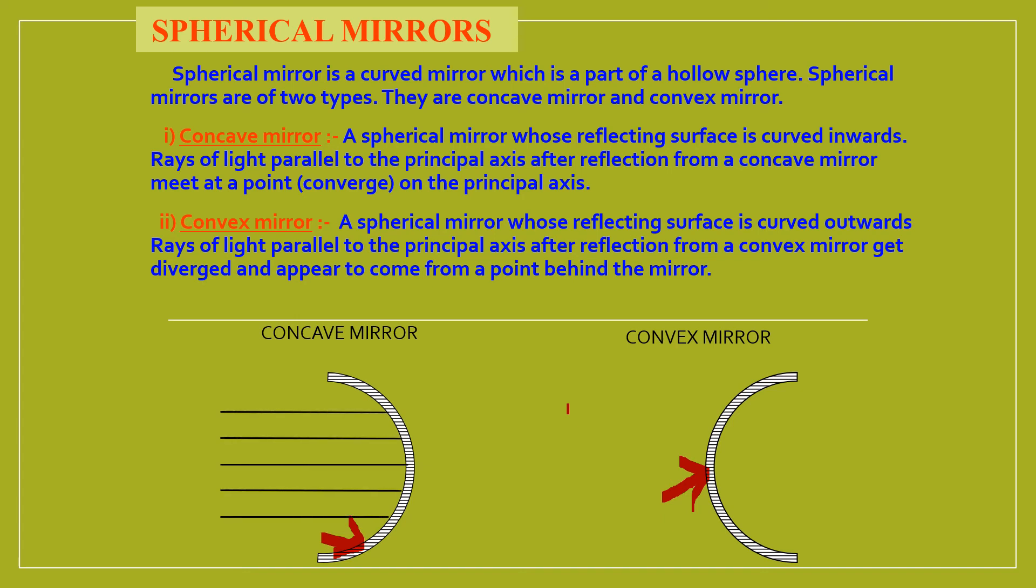A spherical mirror where it is a concave mirror - the rays of light parallel to the principal axis after reflection converge and meet at a point which is called as focus, a point on the principal axis which is called as focus.